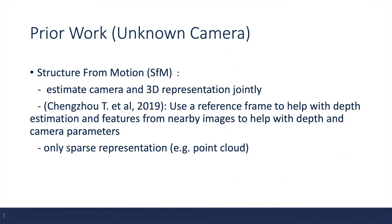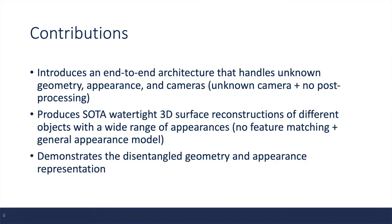When we don't know camera poses, the most popular algorithm is structure from motion. In this case, we try to estimate the camera parameters with the 3D geometry jointly. However, it can only output sparse representations such as 3D point cloud.